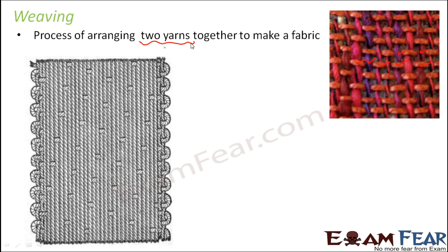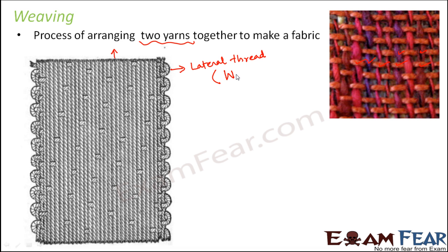Where are those two distinct sets used? One is the longitudinal ones and the other is the lateral ones, that is the horizontal ones. The lateral thread is termed as weft and the longitudinal thread is termed as warp.